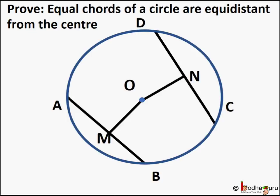That is, given AB and CD as chords which are equal in length, they are equidistant from the center — this means OM is equal to ON. That is what we need to prove.